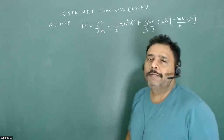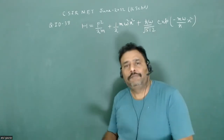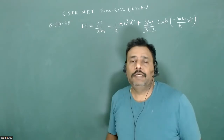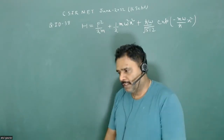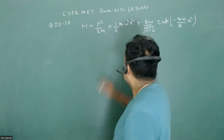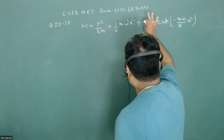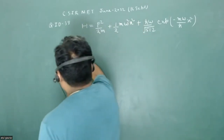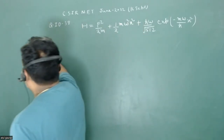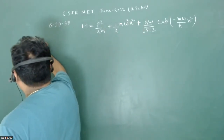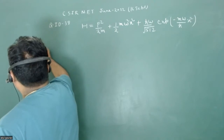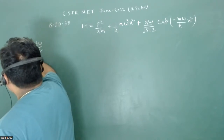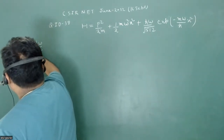We have to calculate the energy of the ground state after applying the perturbation. Without perturbation, the ground state energy is e_g^(0) = h-bar omega over 2.